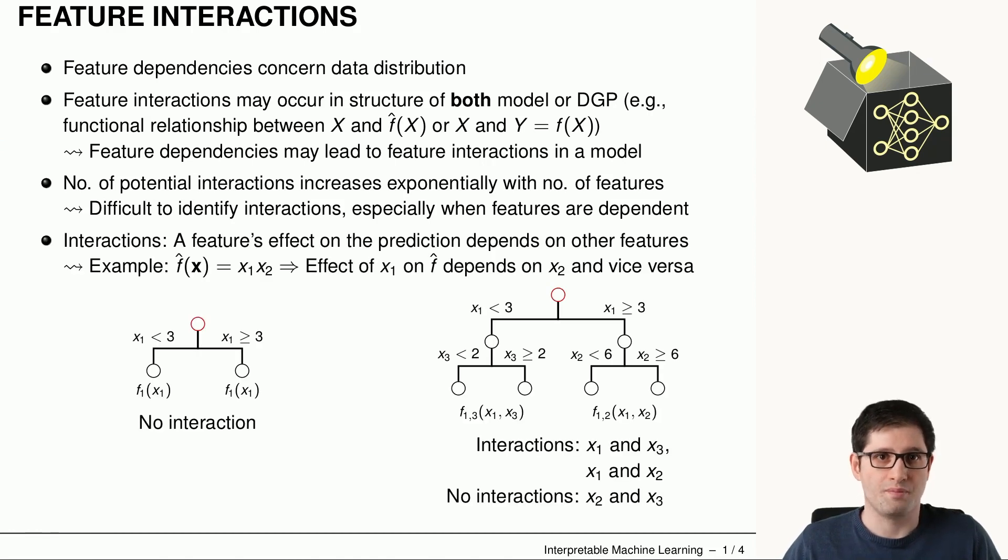Let's make an example. Usually feature interactions are present if the effect of a feature on the prediction depends also on other features. For example, here the effect of x1 depends on the effect of x2.